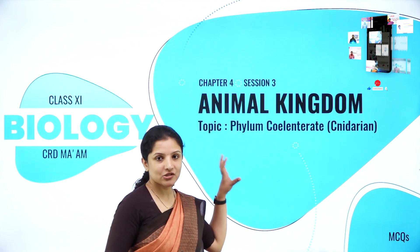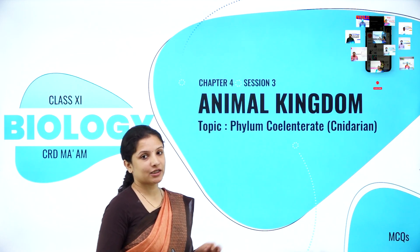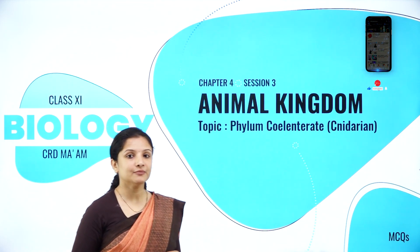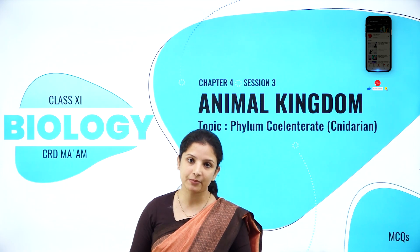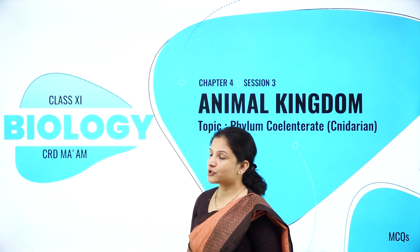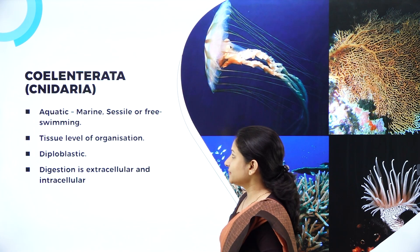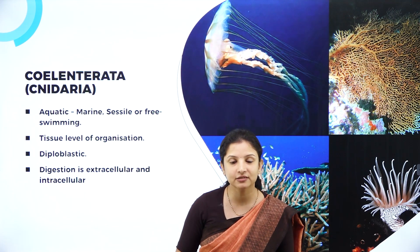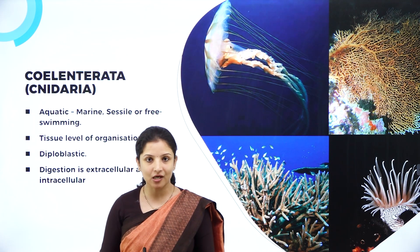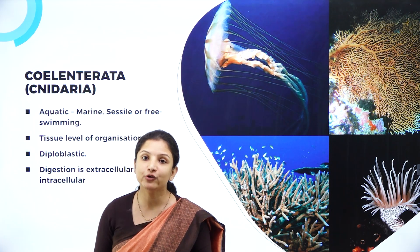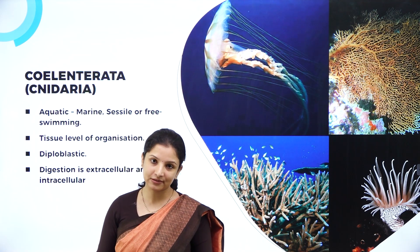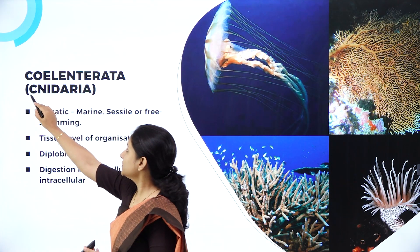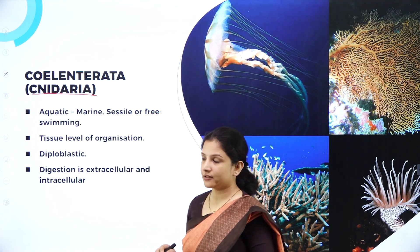We'll learn the general characteristics of this particular phylum and then move on to knowing about some of the MCQs that can be framed under this topic. Phylum Coelenterata are also called as cnidarians because they have specialized structures called cnidoblasts or nematocysts in them. That is why one more name for them is cnidaria or cnidarians.